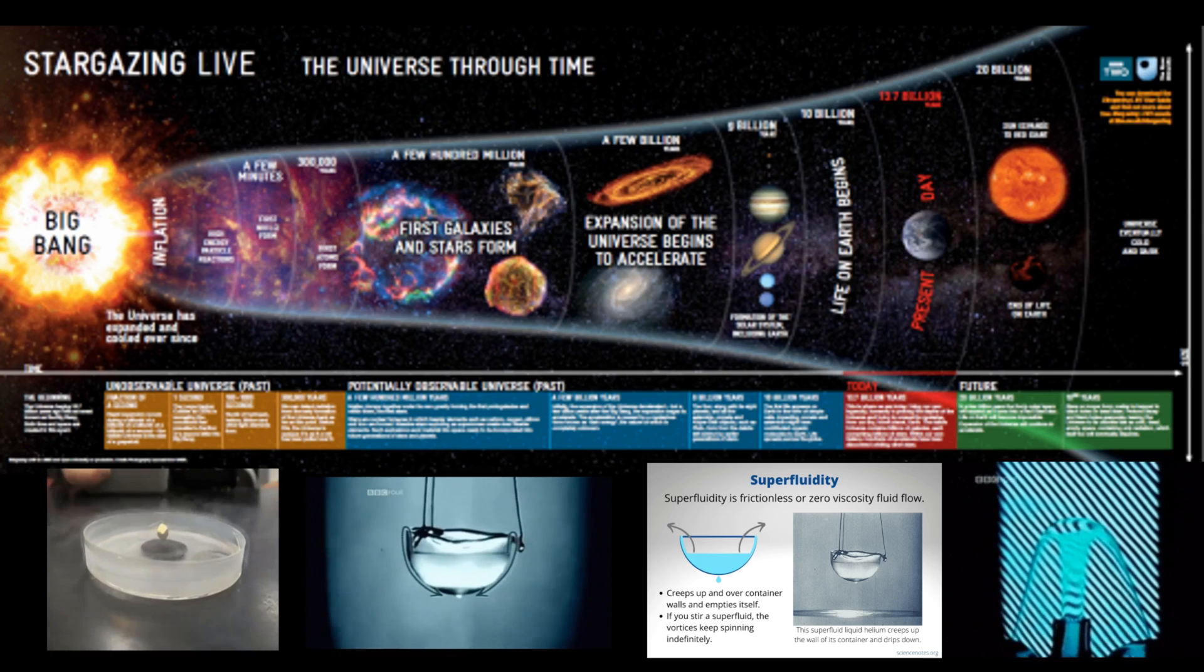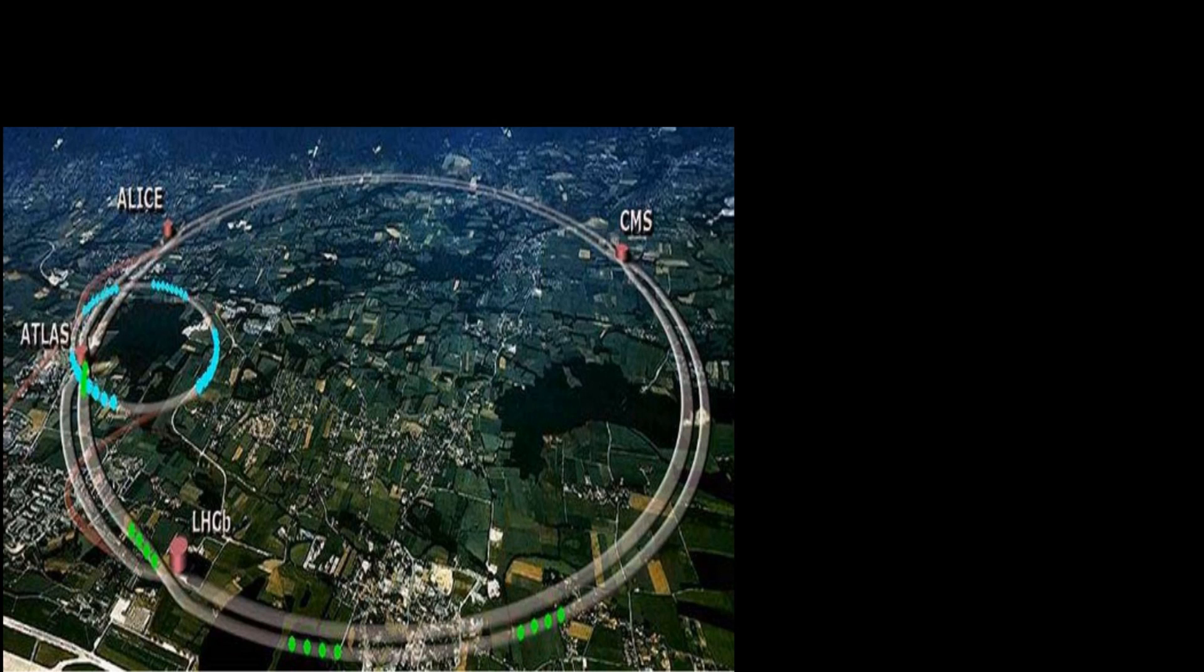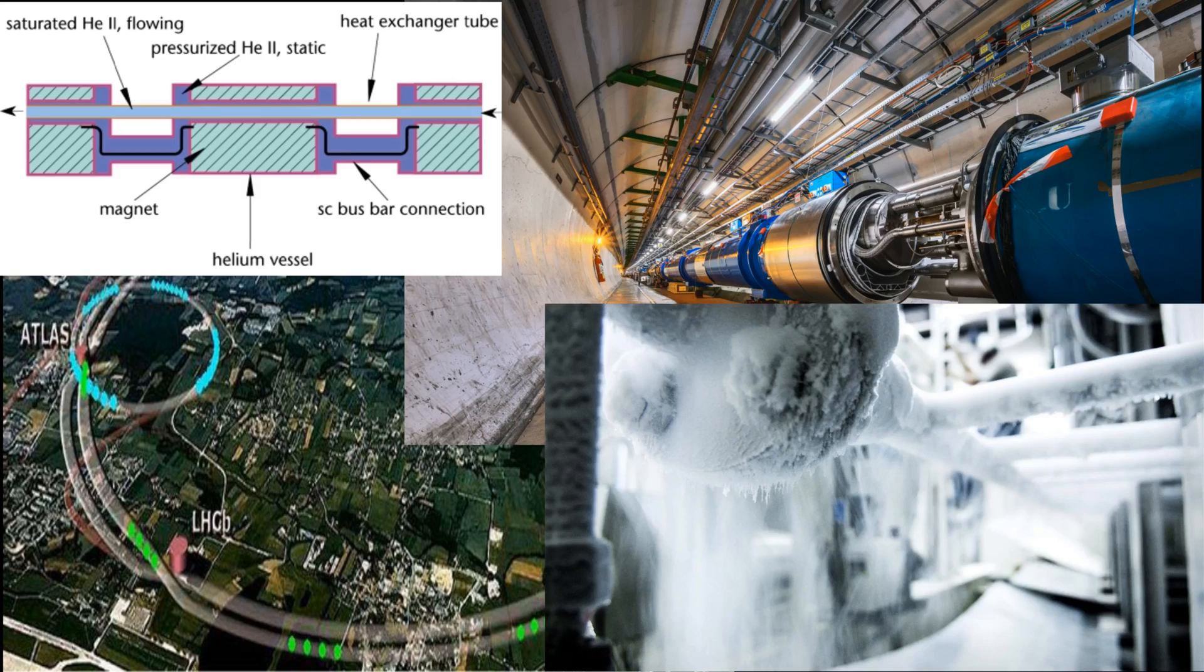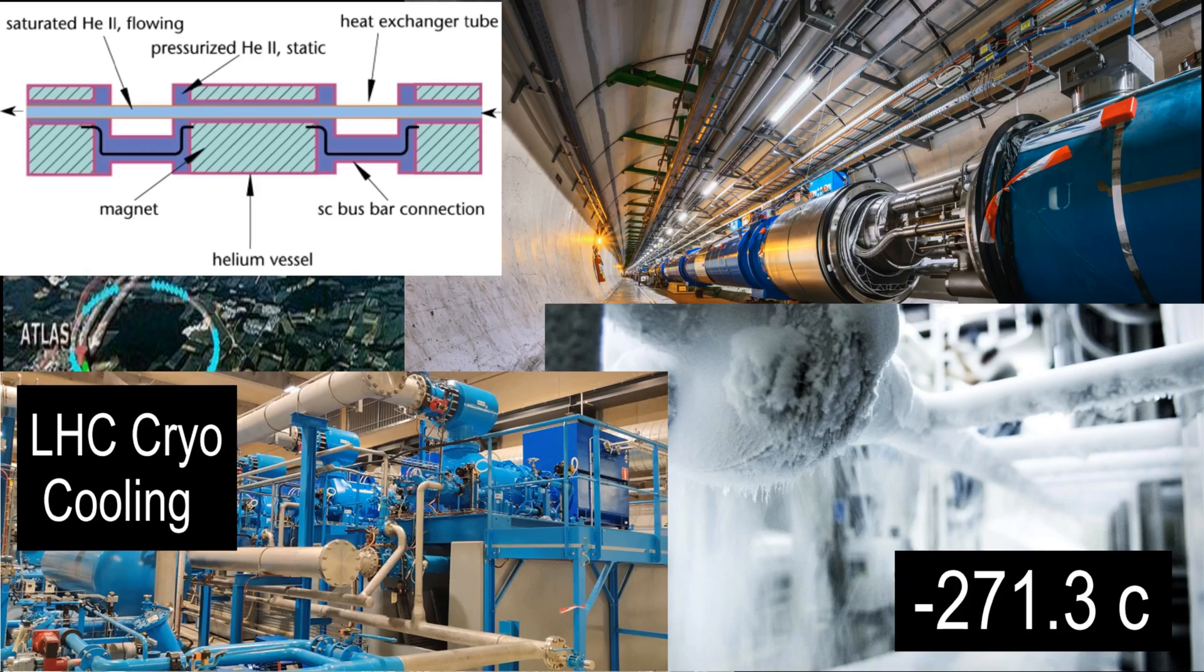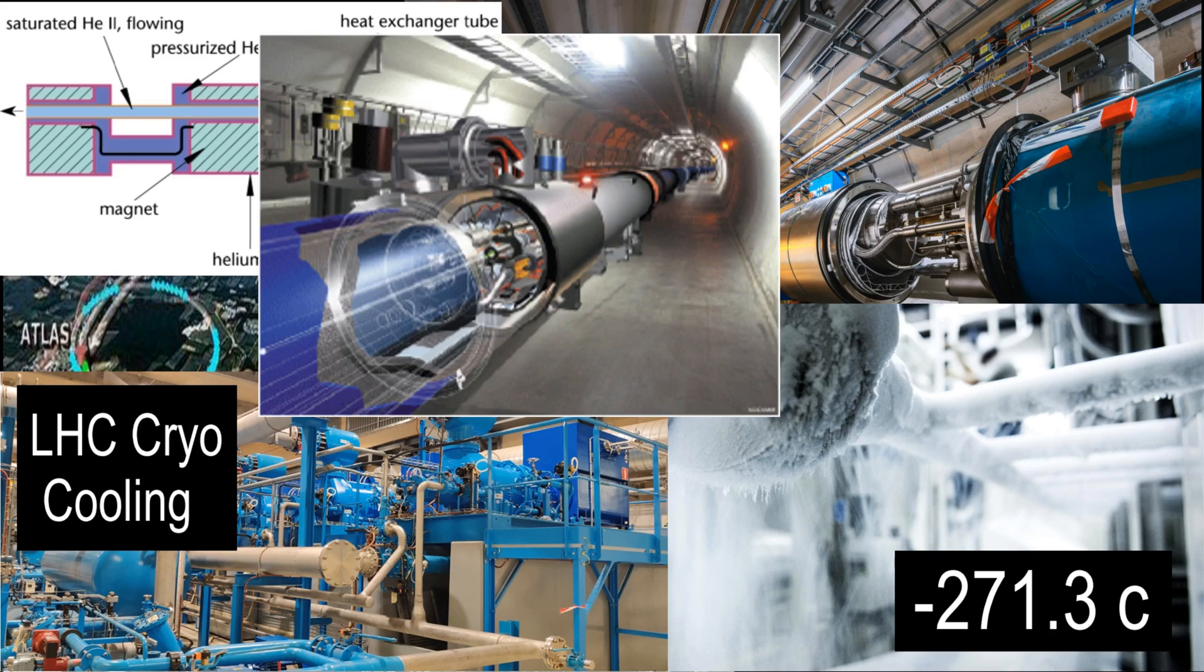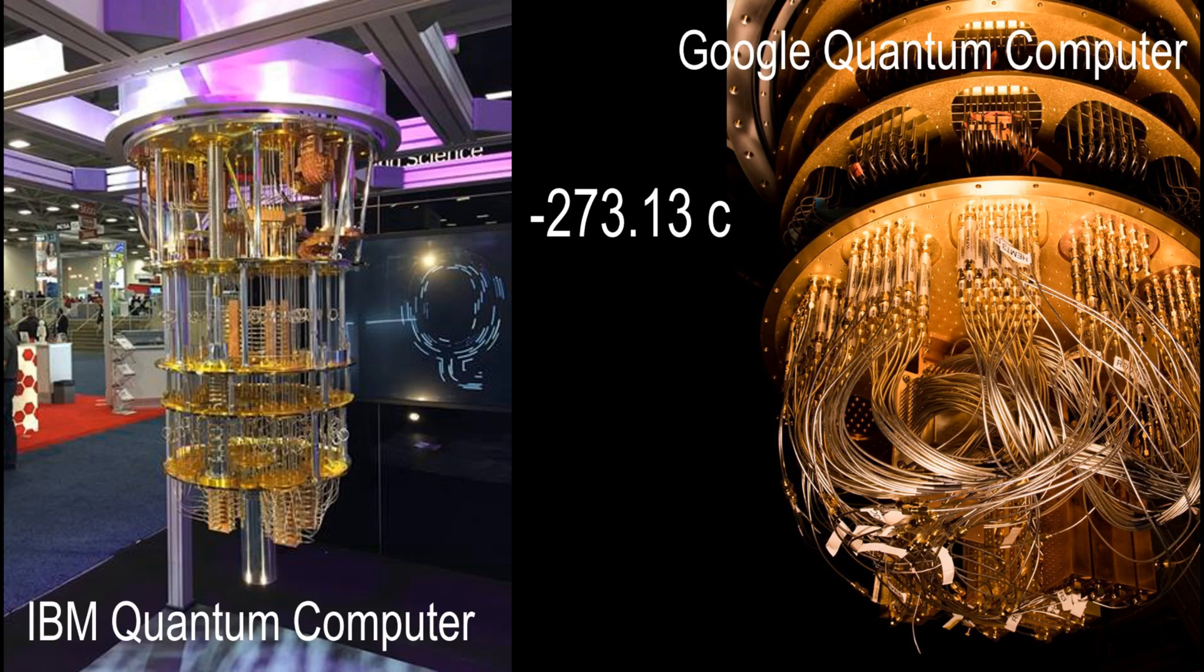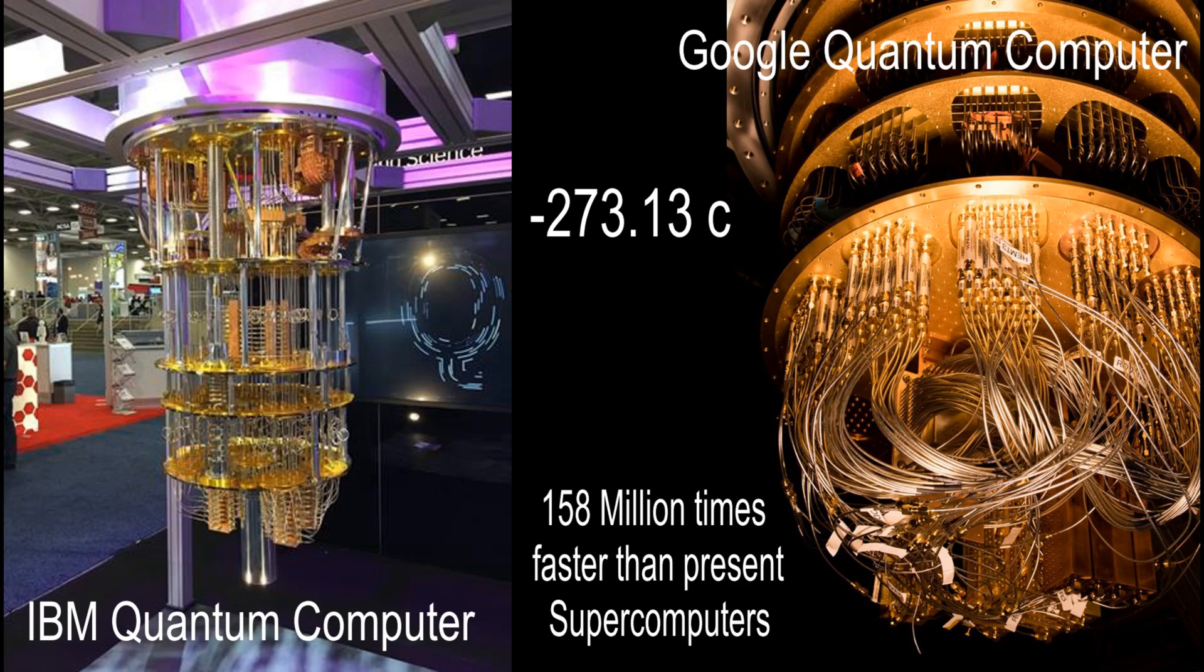Extreme cooling is used in our largest science projects. Large Hadron Collider main magnets are cooled down to minus 271.3 Celsius to confine the proton's beam into a focus of 3.5 micron width. Quantum computing require cooling to minus 273.13 Celsius to perform 158 million times faster than our latest supercomputers.